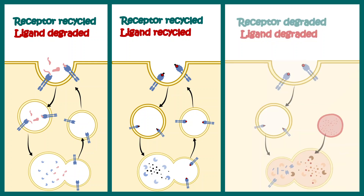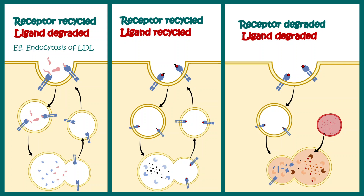In the case of LDL endocytosis, the LDL particle is processed and digested inside the endosome, but the LDL receptor is displayed back on the surface. In the case of iron transport with the help of the iron carrier transferrin and the transferrin receptor, both the transferrin receptor and transferrin are displayed back on the surface — meaning both receptor and ligand are recycled.